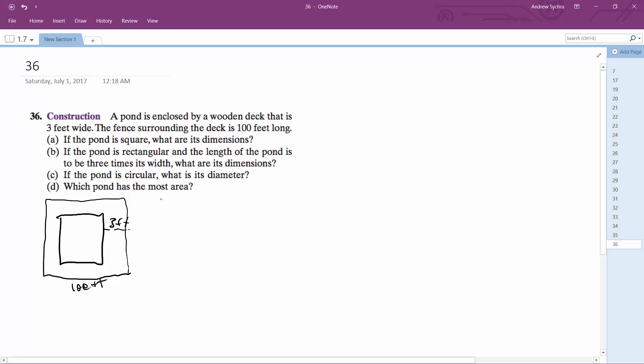So I'll just call the pond X. So we get 4X plus 6, because it's three on each side, is equal to 100. So we get 4X plus 24 equals 100. So we get 4X equals 76.